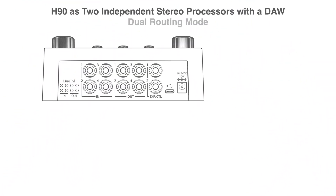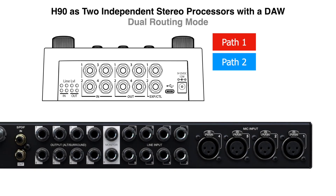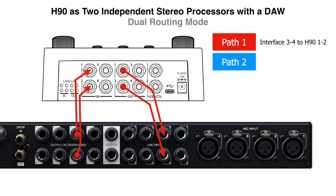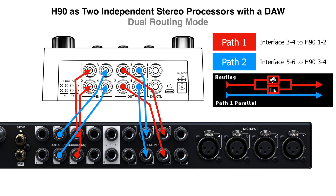If we switch the global routing to dual mode, the H90 can act as two independent stereo effects processors, one on each path. This requires an audio interface with at least four inputs and four outputs. Take any available stereo output to H90's in 1 and 2, and from H90's out 1 and 2 connect to an available stereo input pair — this is path 1. Take another stereo output pair and connect to ins 3 and 4 on the H90, and take out 3 and 4 back to another available input pair — this is path 2. We recommend setting the I/O on the interface to -10 dB and the H90 to line level operation for best results.